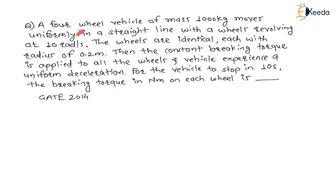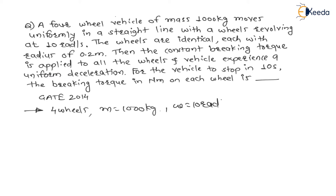The question: a 4-wheel vehicle of mass 1000 kg moves uniformly in a straight line with the wheels revolving at 10 rad per second — that is the angular velocity of the wheels. The wheels are identical, each with radius equal to 0.2 meter.